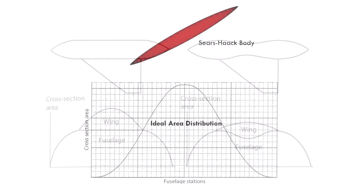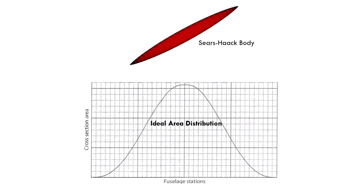The ideal shape for minimizing wave drag is called the Sears-Haack body, which features a gradual, smooth change in cross-sectional area along its length. The closer the volume distribution of an aircraft or other high-speed vehicle comes to the ideal Sears-Haack body, the lower its wave drag will be.